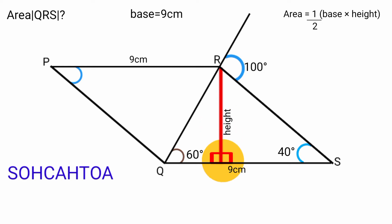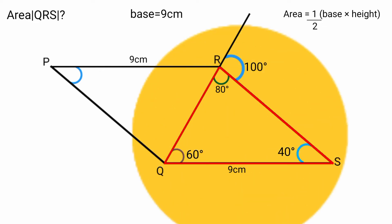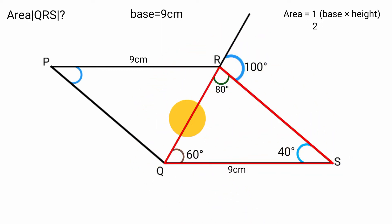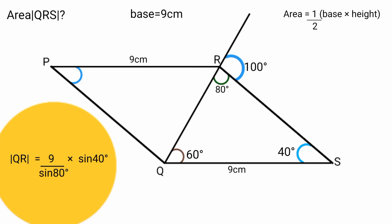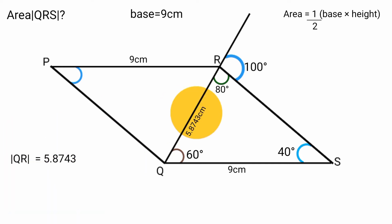Since we have all the angles of the triangle and the length of side PR from the parent triangle, we can use the sine rule to find the length of the other sides. Using the sine rule: 9 over sine 80 degrees equals QR over sine 40 degrees. Making QR the subject: QR equals 9 over sine 80 degrees times sine 40 degrees, which gives approximately 5.8743 centimeters.